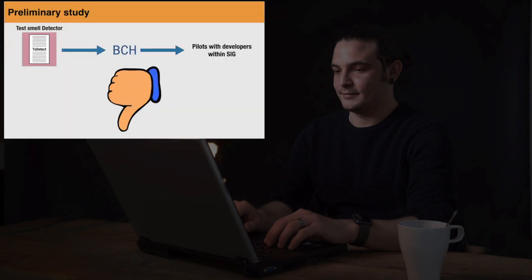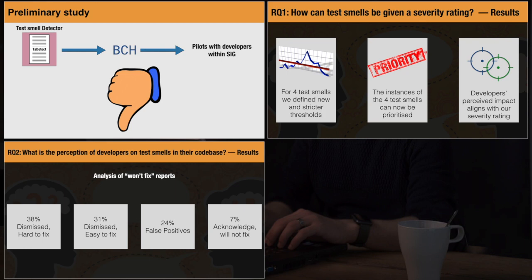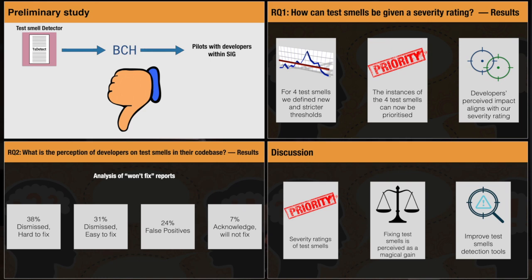To conclude: we wanted to study test smells in an industry setting, but we soon realized that the way test smells were calculated had some problems. So we designed a study to decrease the number of false positives in the detection of smells and to allow developers to prioritize smell instances. Then, with the new severity thresholds, we studied how developers perceive the smells in their own codebase. Finally, we discussed issues we faced when creating the severity thresholds and the detection strategies. Thank you for watching.